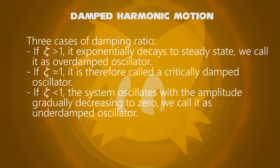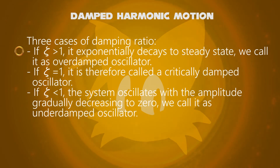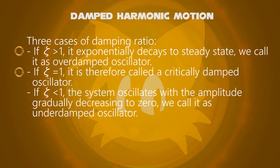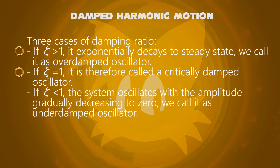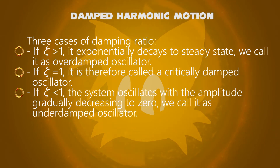There are three cases of damping ratio. If the damping ratio is greater than 1, the system returns to steady state without oscillation — this is called an overdamped oscillator. If the damping ratio equals 1, the system returns to steady state as quickly as possible without oscillating, although overshoot can occur — this is called a critically damped oscillator. If the damping ratio is less than 1, the system oscillates with amplitude gradually decreasing to zero — this is called an underdamped oscillator.